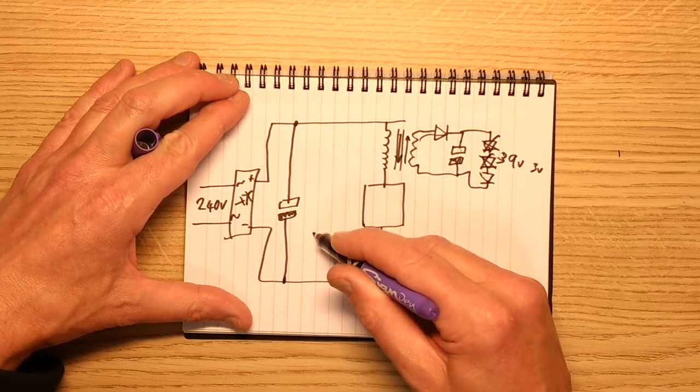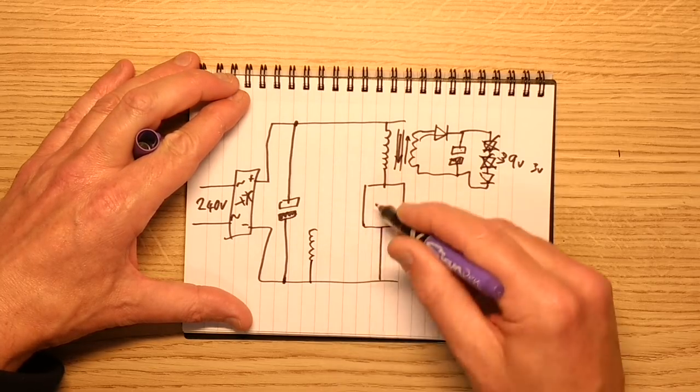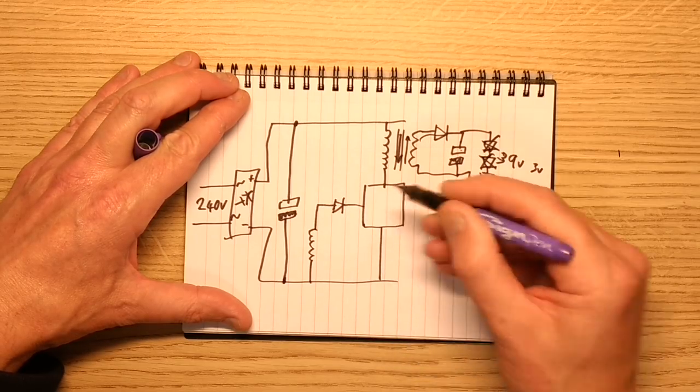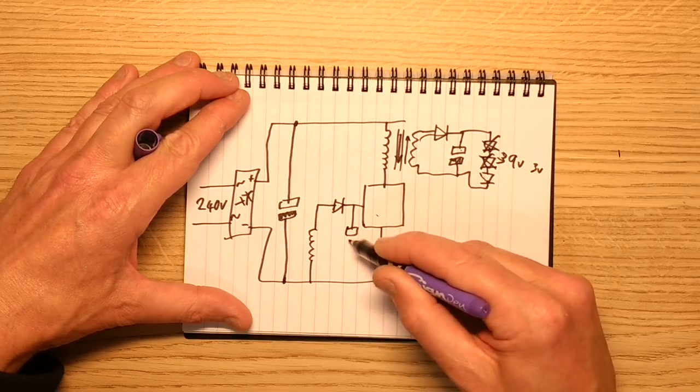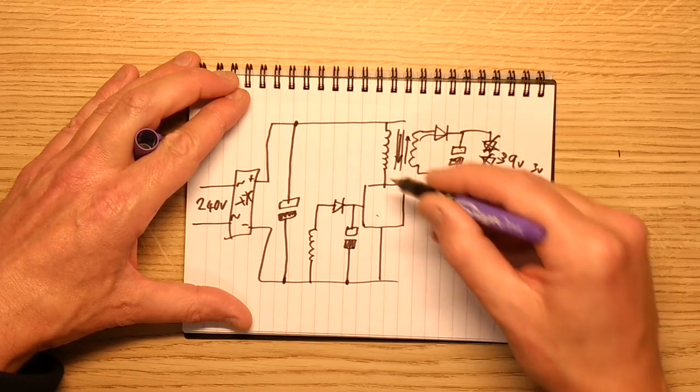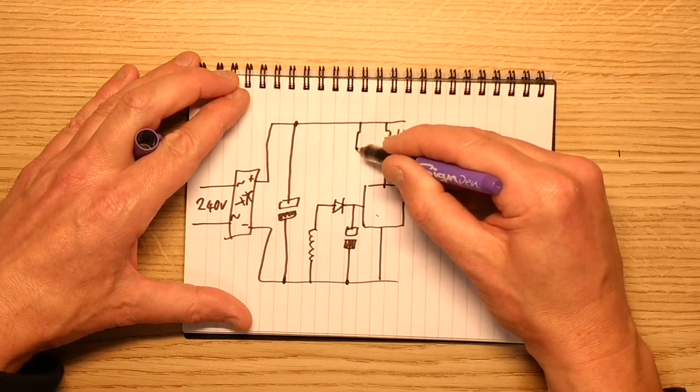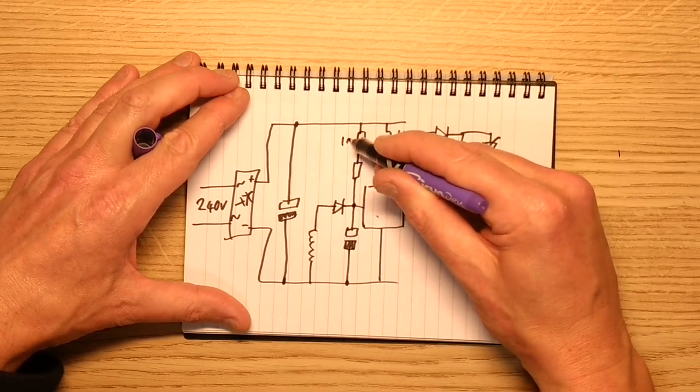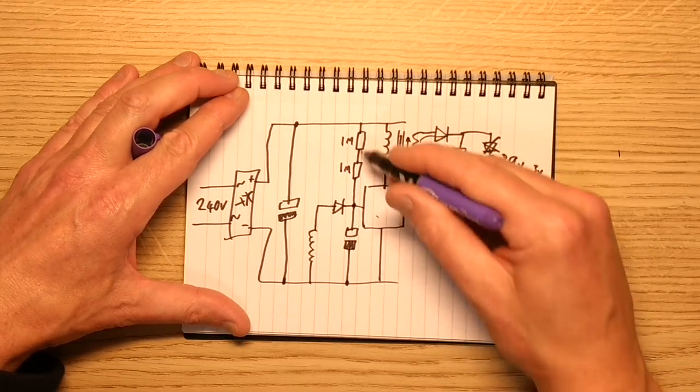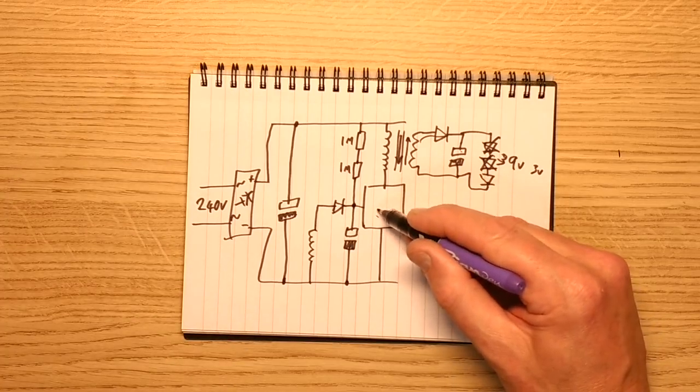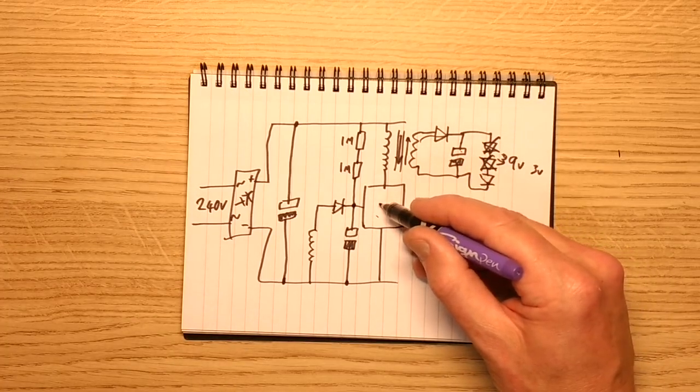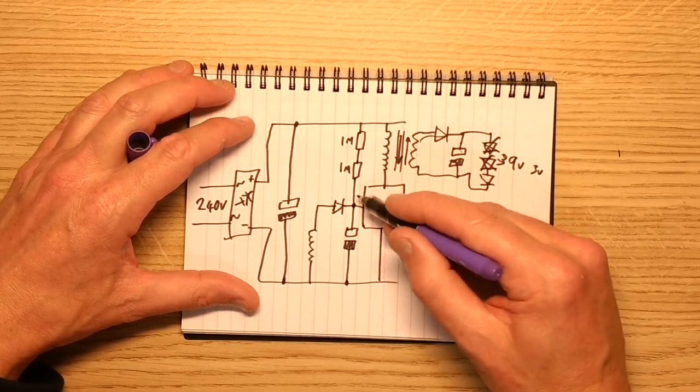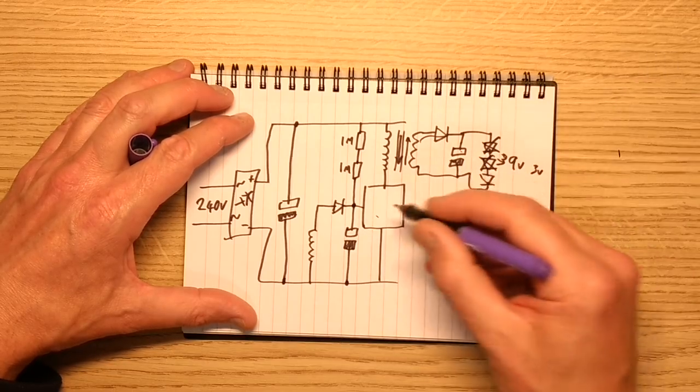But there's also another winding over here on the primary side that is used to charge a capacitor for the power supply's own power supply, the actual driver chip's own power supply. So it's got its own capacitor there. And initially when you turn that on, there's a slight delay and this is called the bootstrap circuit I've mentioned it before. And these are typically one megaohm, they're very high value resistors, and they gradually charge that capacitor up.